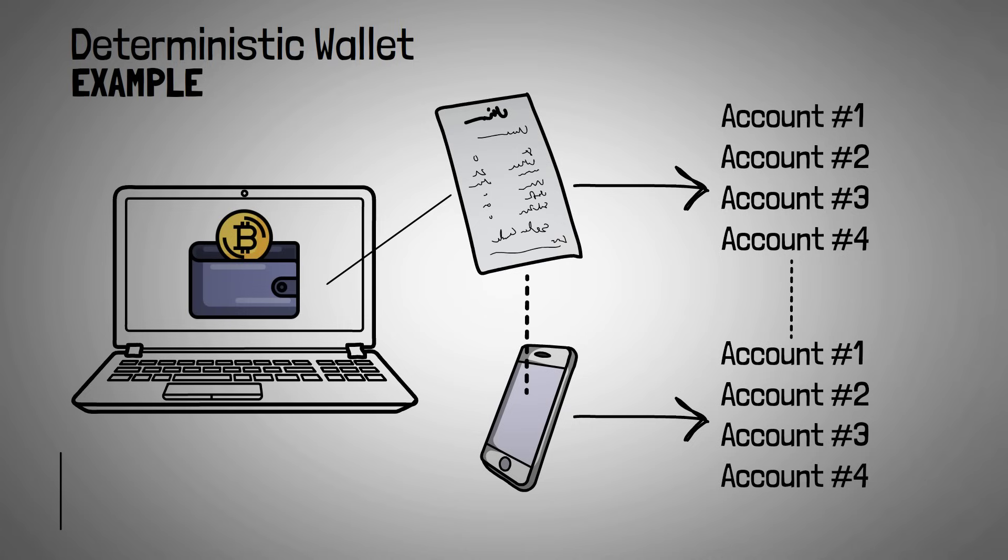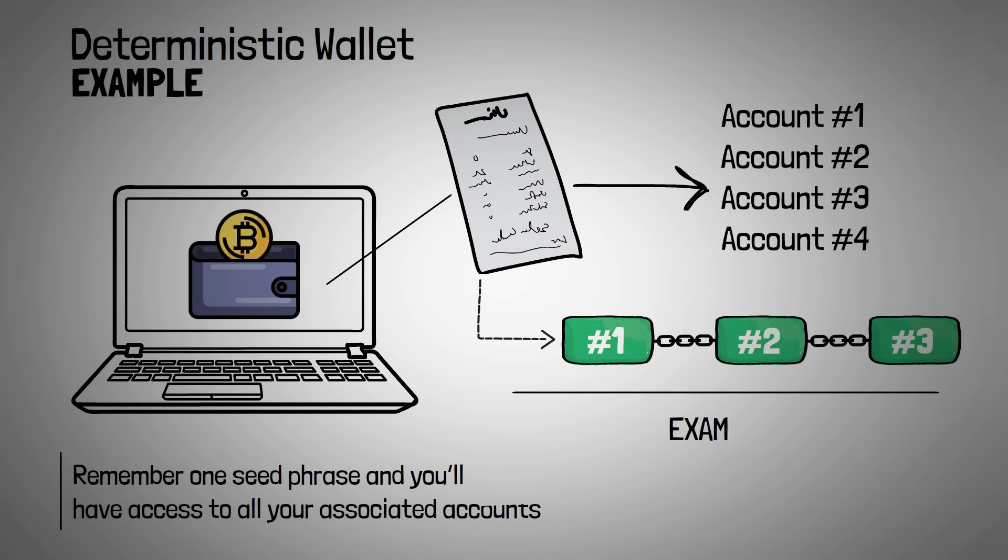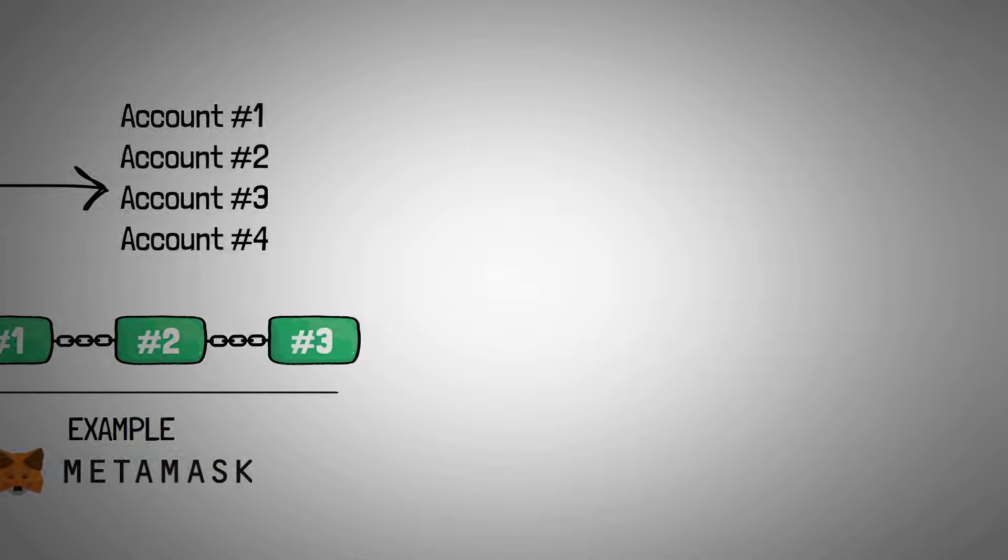The benefit of a deterministic wallet is that you can remember one single seed phrase and you'll have access to all of the associated accounts, no matter where you import that seed phrase to. An easy way to remember this is that with deterministic wallets, your seed phrase determines the first account's information and each next account's information. Metamask, for example, is a deterministic wallet in this way.